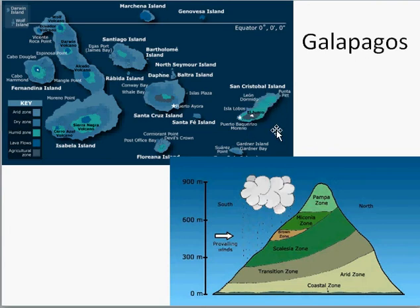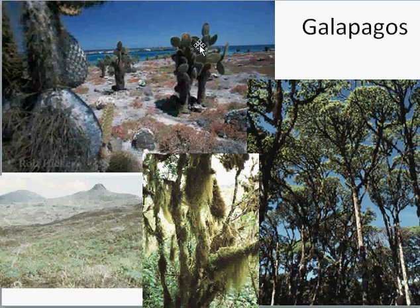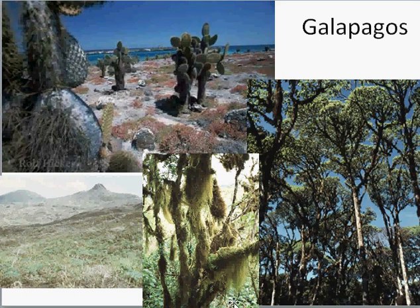In some older islands that have been effectively eroded, you get very little of these upper vegetated zones, and the island is mainly in the arid zone. At the bottom you have an arid zone with cacti and low shrubs — including a species of prickly pear called Opuntia, which probably arrived as a piece of cactus rafting across the ocean. Further up you get thicket and woodland vegetation, and at the very top, humid cloud forests with large numbers of epiphytes.